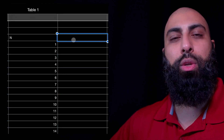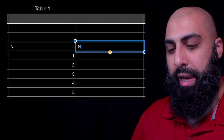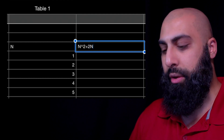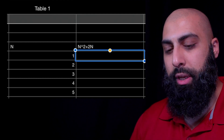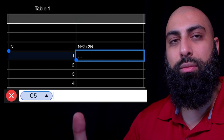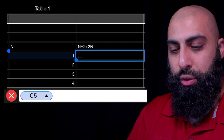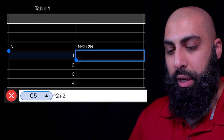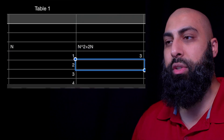Because we know the quadratic sequence was n squared plus 2n, we're going to write here n squared plus 2 times n, and fill up the formula. We write equals, and n in this case is the first cell — number 1 — so n equals 1, then we square that and add 2 times n, and press return.